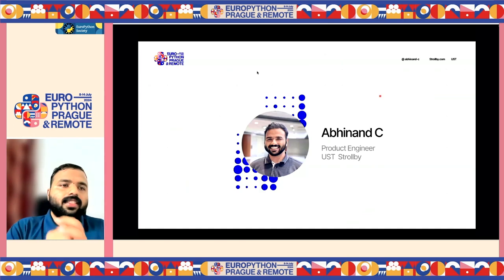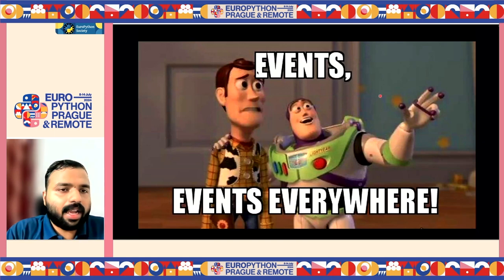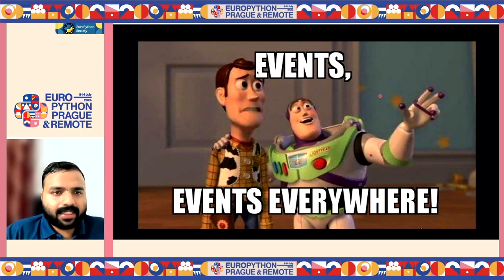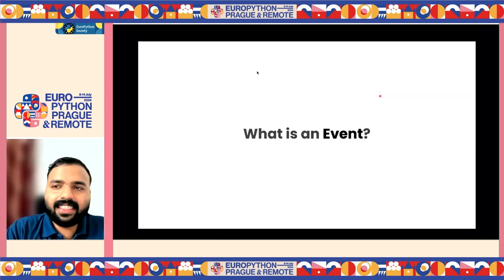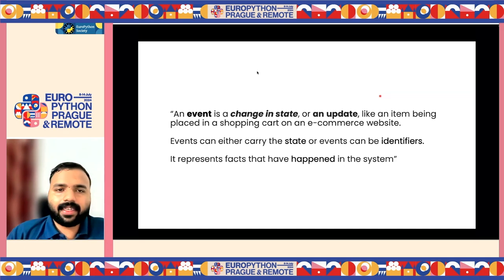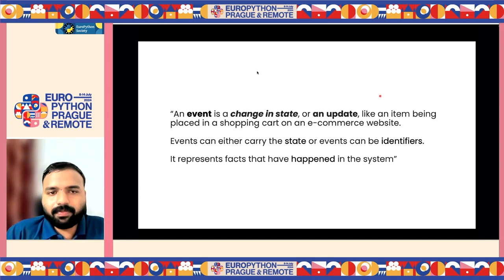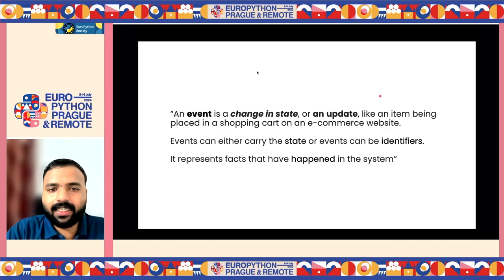Let's talk about event-driven architecture. We have heard a lot about events — events are everywhere, event-driven architecture is everywhere. But what exactly is an event? An event is basically a change in state or an update. An example would be an item being placed in a shopping cart. It can contain data like the state of the system or an identifier, and it usually represents facts that have happened in the system.